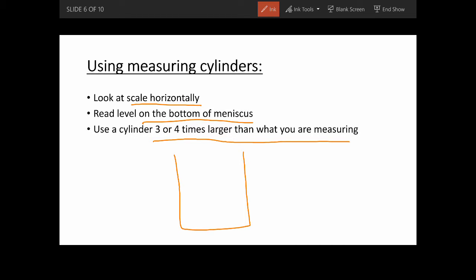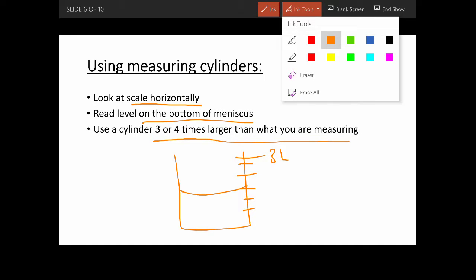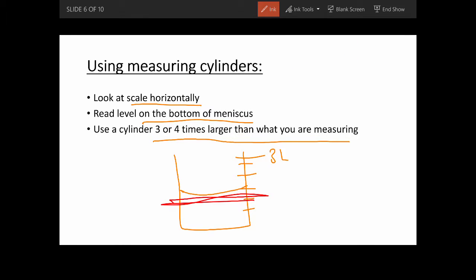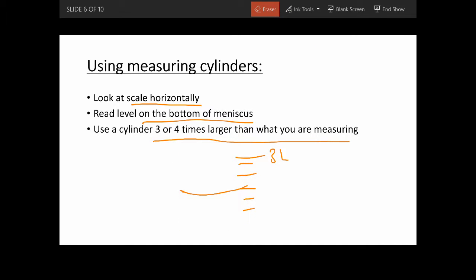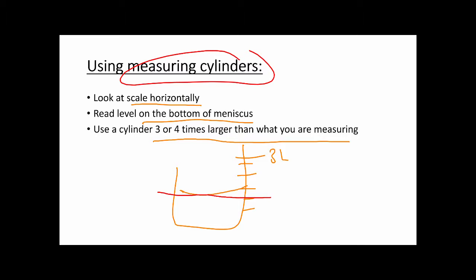So let's say this is a measuring cylinder. If you're measuring something that is one litre, you're going to use something that measures up to three litres. The volume of the liquid — you are going to look at the bottom of the meniscus, which is the lowest part. You measure that and look at the scale horizontally. Those are the points for measuring cylinders.